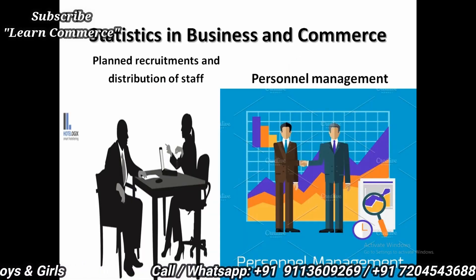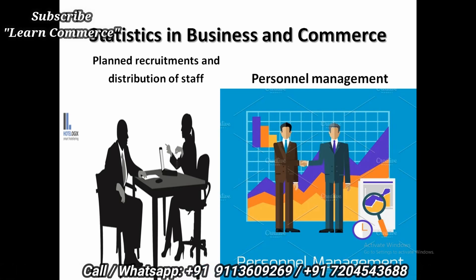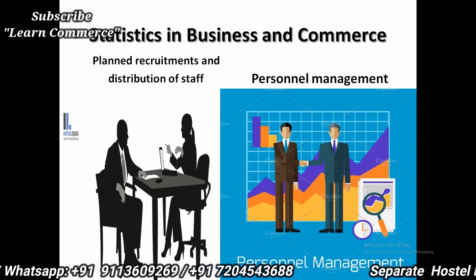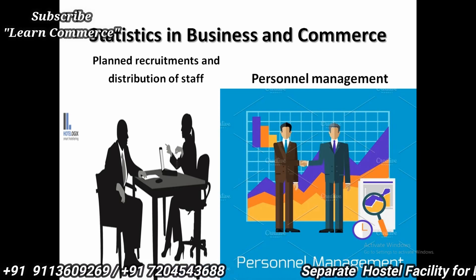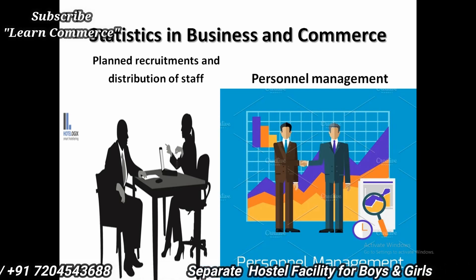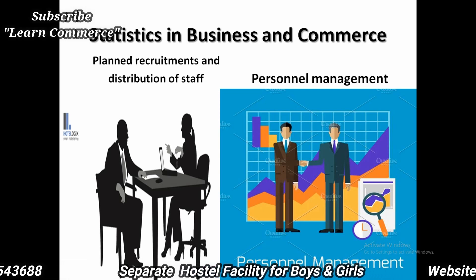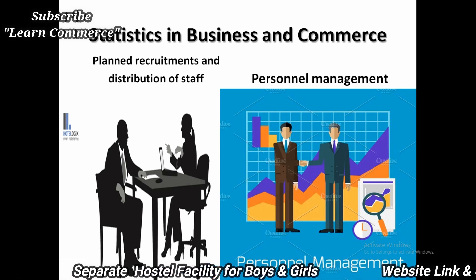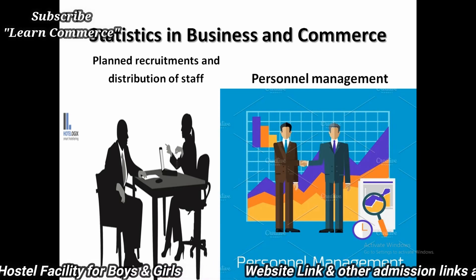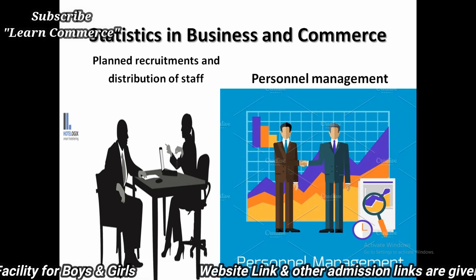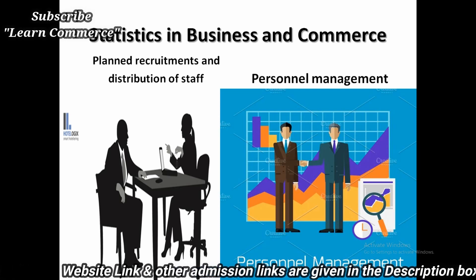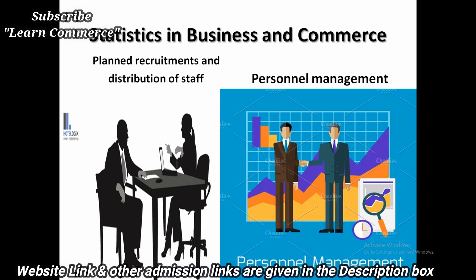3. Statistics in Business and Commerce. Statistics is part and parcel of economics, commerce, and business management. Statistical analysis of various prices, demand, and production are helpful to businessmen and economists. Cost of living index numbers help in economic planning and fixation of wages, and are used to estimate the value of money. Analysis of demand, price, production cost, and inventory cost help in decision making in business activities.